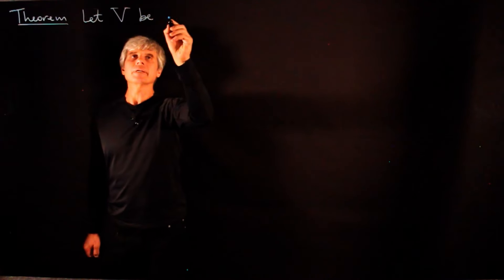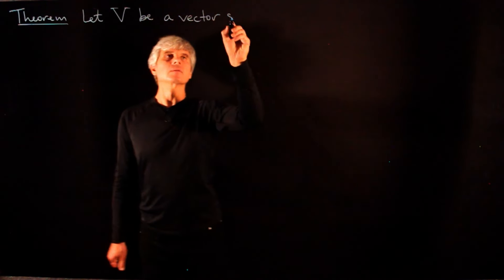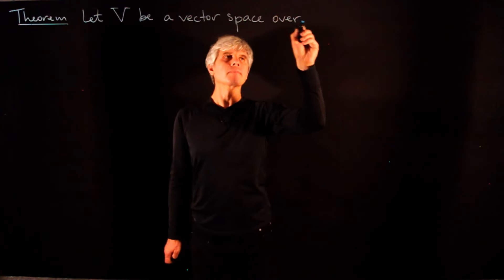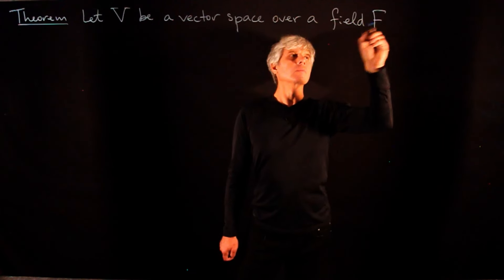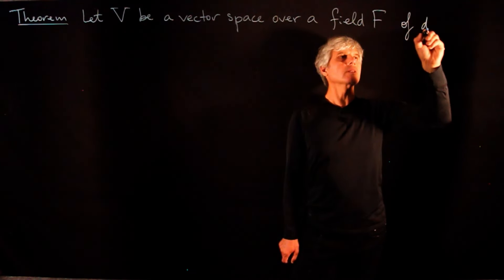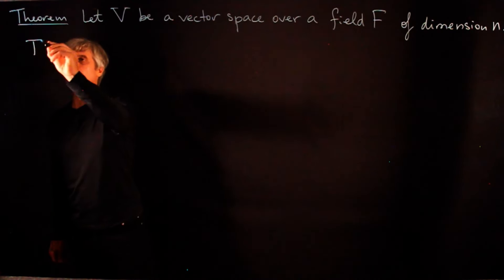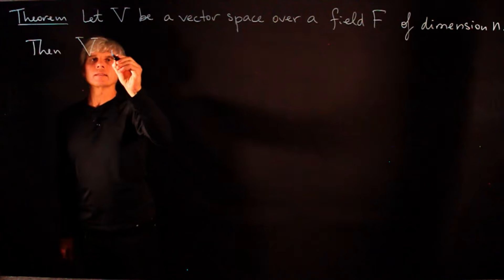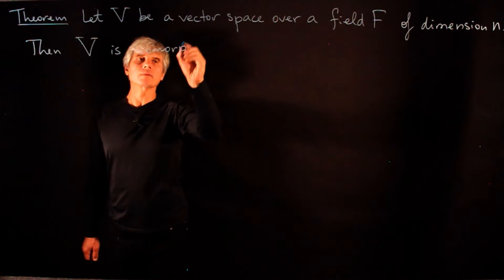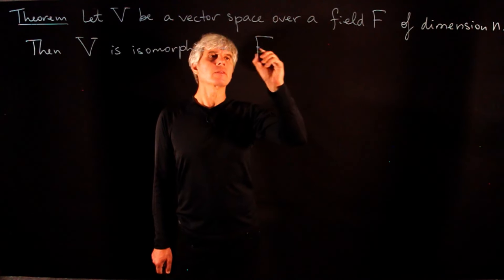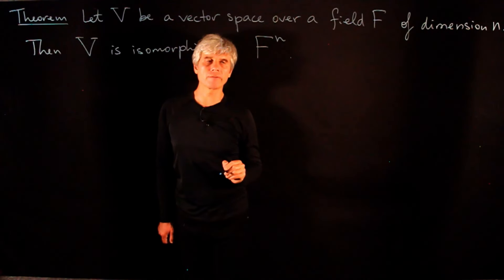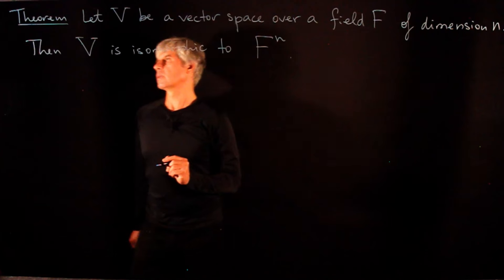Now let us state the main theorem of today's lecture. Let V be a vector space over the field F of dimension N. Then V is isomorphic to the space F^N of N-component vectors with entries in F.